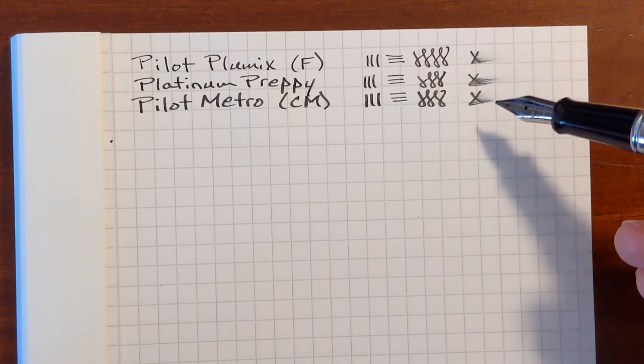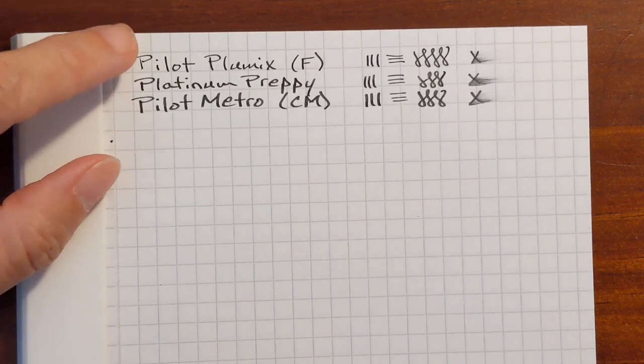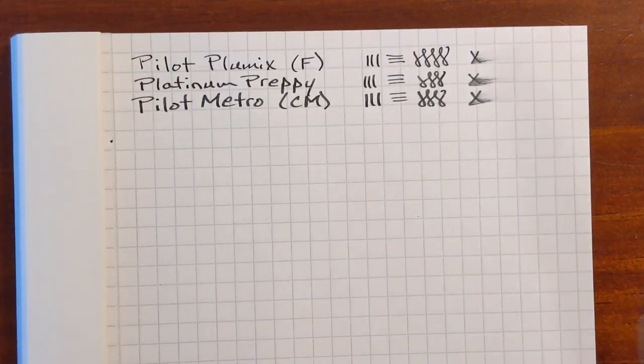The Preppy was just slightly wetter than the two Pilots, and you can see the difference in line width. It's a noticeable difference between the cursive medium and the fine.